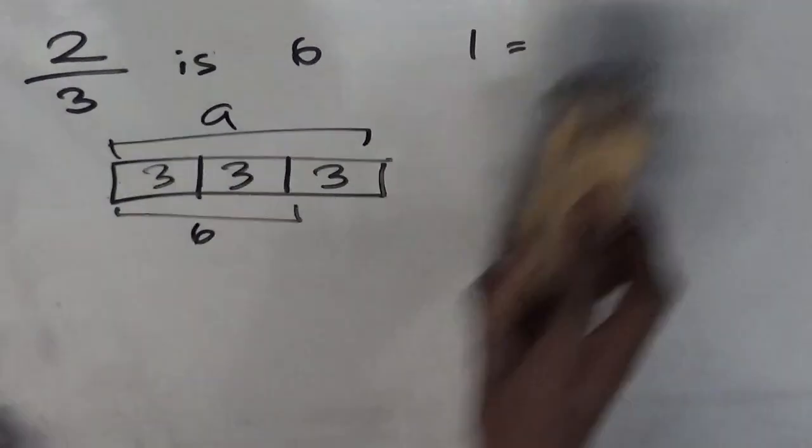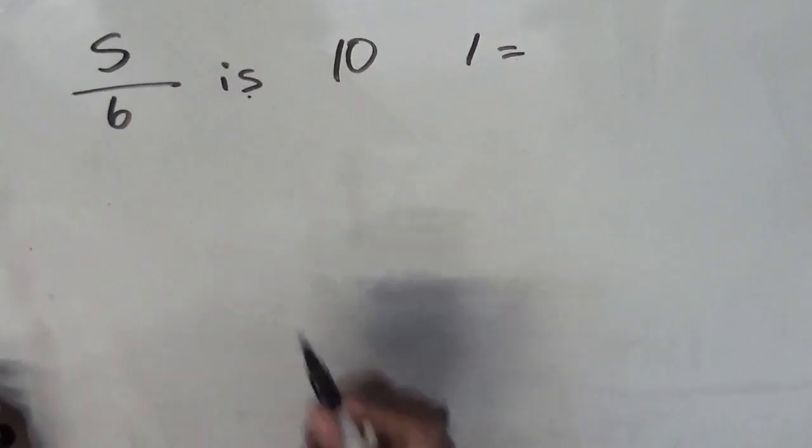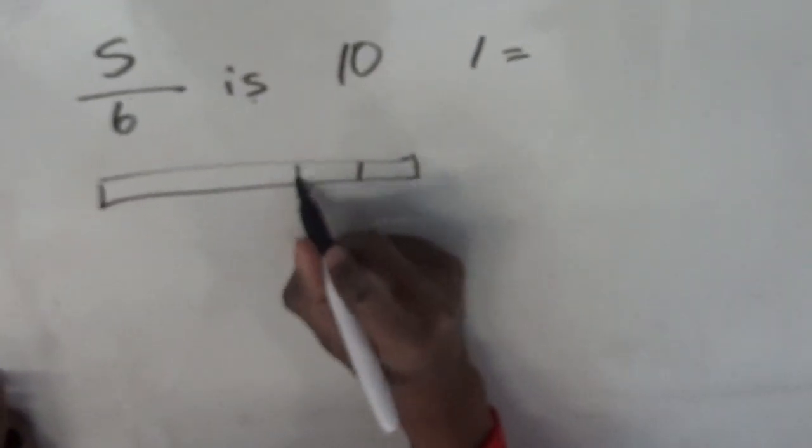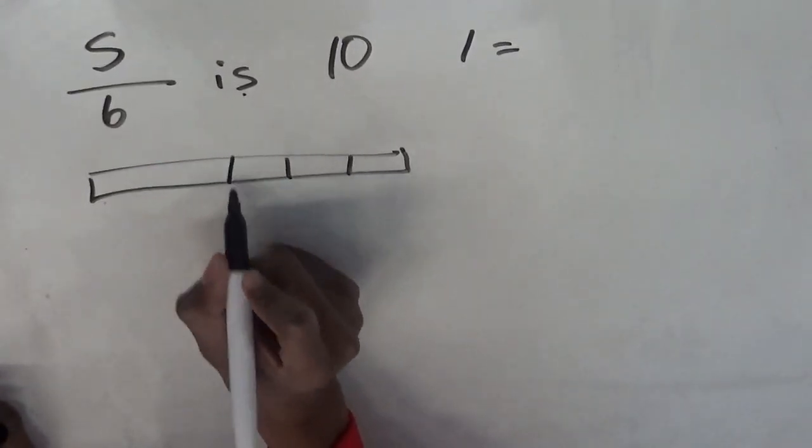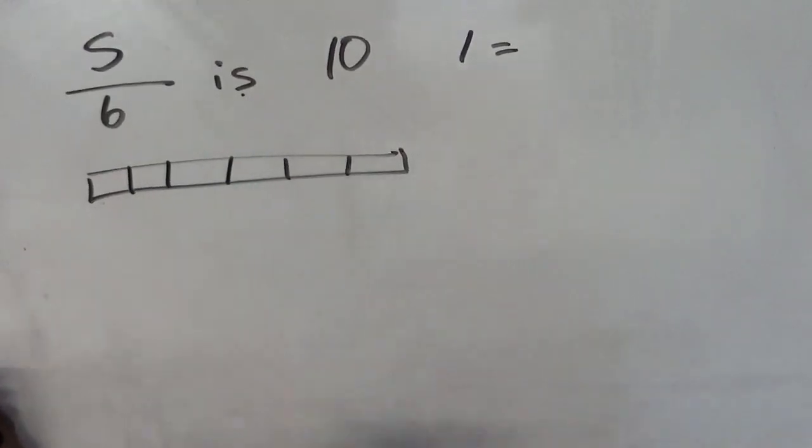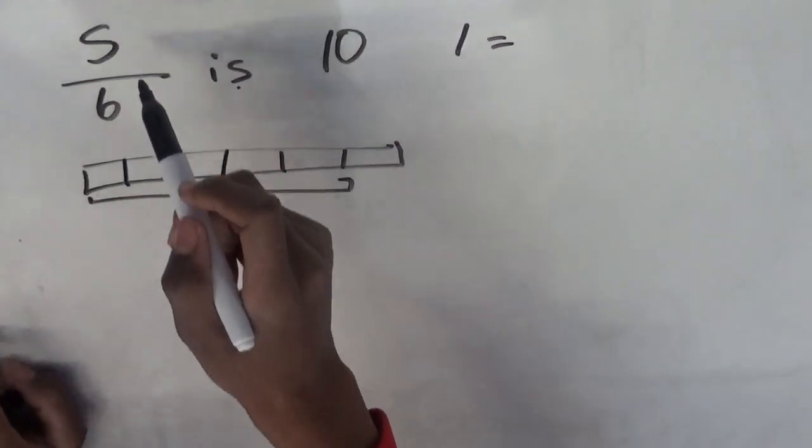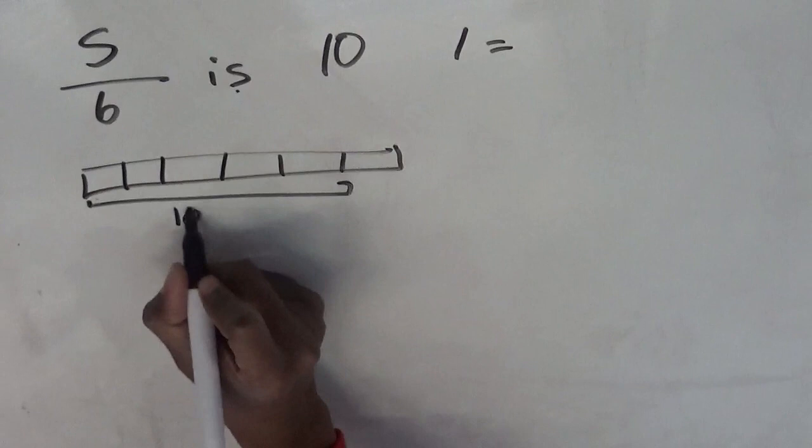So moving on to a slightly trickier one. 5 sixths is 10. Now what will the whole one be? Now if we do the same again, and label this as a bar, split it into 6 sections, since the denominator is 6. And then we underline 5, because the numerator is 5, and then we label those 5 blocks as 10.